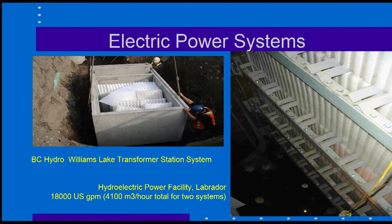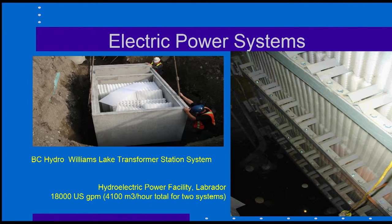Here are two more applications for electric power systems. The one on the left is a transformer station for BC Hydro at Williams Lake, British Columbia, during the installation of it. The one on the right is a very large system for a hydroelectric power facility in Labrador, Canada. That's an 18,000 US GPM unit — actually it's two 9,000 GPM units.